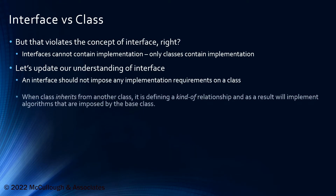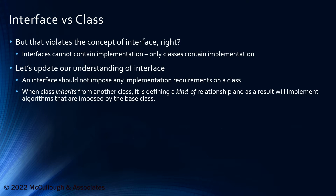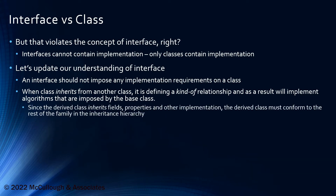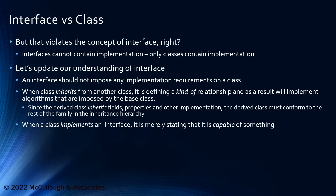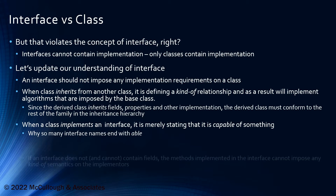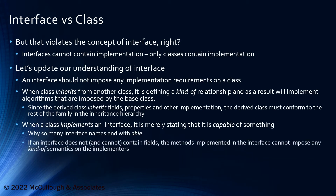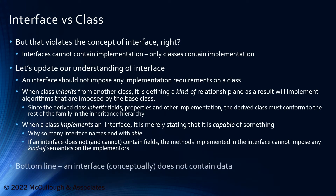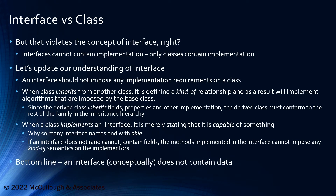Think about this. When a class inherits from another class, it creates a kind of relationship. When we implement an interface, we're just saying we're capable of something. So we can have things that implement an interface that are completely unrelated — implementing an interface can be done by a lot of classes that are otherwise completely unrelated. So as long as we're adhering to those concepts, an interface could have some default implementation.